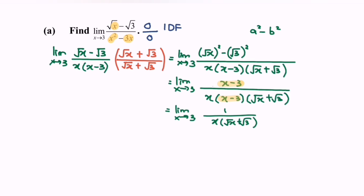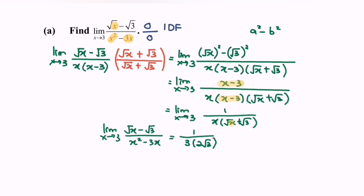Next, substitute the value 3 into the function. We will have square root of 3 plus square root of 3. So finally, the answer would be 1 over 6 multiplied by square root of 3.